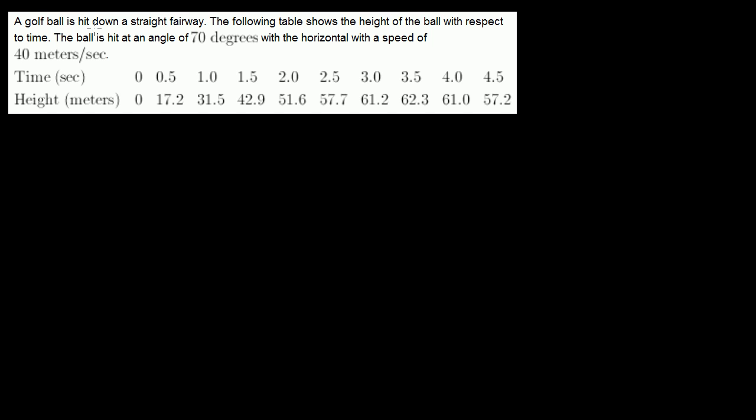I have some data here. It says a golf ball is hit down a fairway. The following table shows the height of the ball with respect to time. The ball is hit at an angle of 70 degrees with the horizontal with a speed of 40 meters per second.